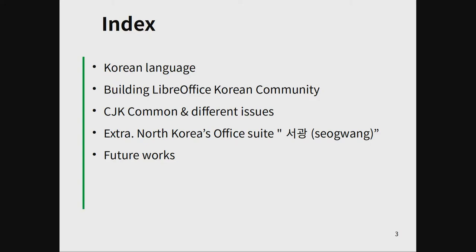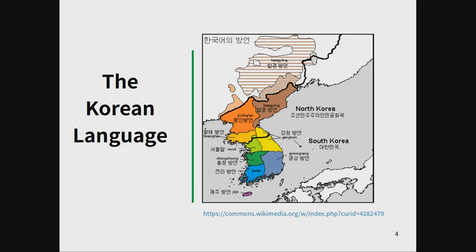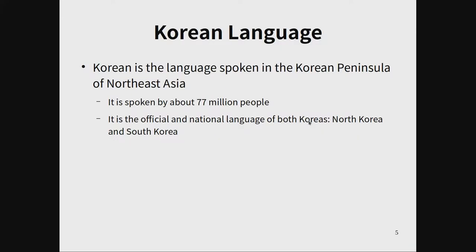In Korean language, this map is the Korean Peninsula's location between China, Russia, and Japan. Korean language is usually used in the Korean Peninsula and Northeast China and Russia. Korean is the language spoken in the Korean Peninsula of Northeast Asia, spoken by about 77 million people. It is the official and national language of both Koreas — North Korea and South Korea.